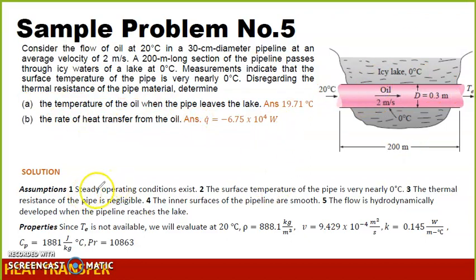These are our assumptions: steady operating conditions exist. The surface temperature of the pipe is very nearly 0 degrees Celsius because the icy lake is also 0 degrees Celsius. The thermal resistance is negligible, that is actually given.